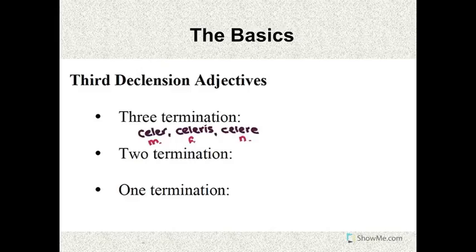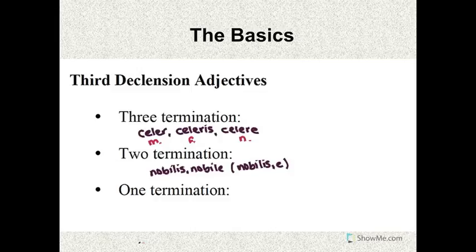There are two termination adjectives, such as nobilis, nobile, often abbreviated as nobilis-e. And this is masculine and feminine are grouped into one category, and neuter for the other. So nobilis is the adjective for masculine and feminine nouns, and nobile is the adjective for neuter nouns.